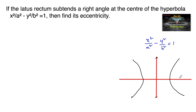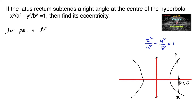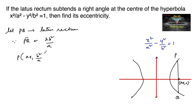Let us consider one of the foci as (ae, 0). We know that the line segment passing through the focus and perpendicular to the transverse axis is the latus rectum. Let PQ denote the latus rectum. Since the length of the latus rectum is 2b² upon a, consider point P as (ae, b²/a) and point Q as (ae, −b²/a), such that PQ equals 2b²/a.